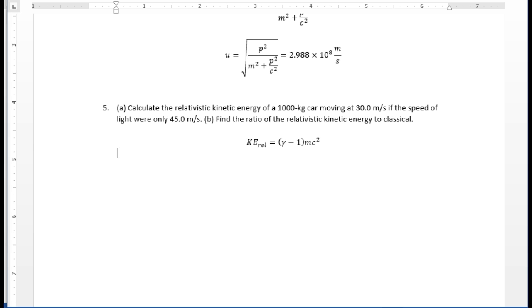Pretty straightforward. So what is gamma? Gamma is 1 divided by square root of 1 minus our velocity over c squared.